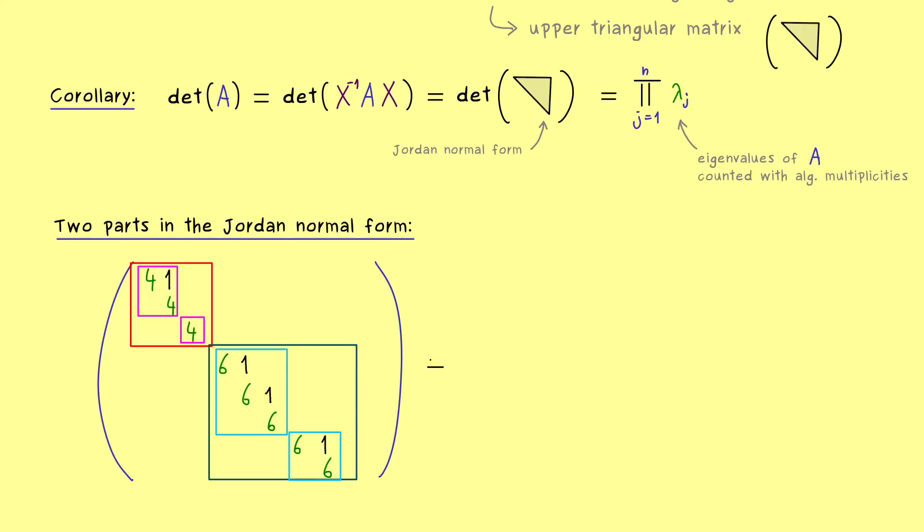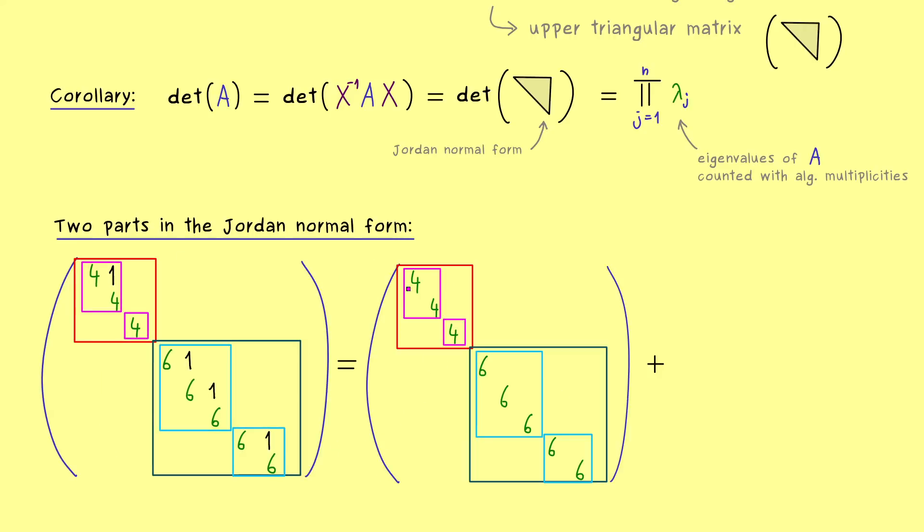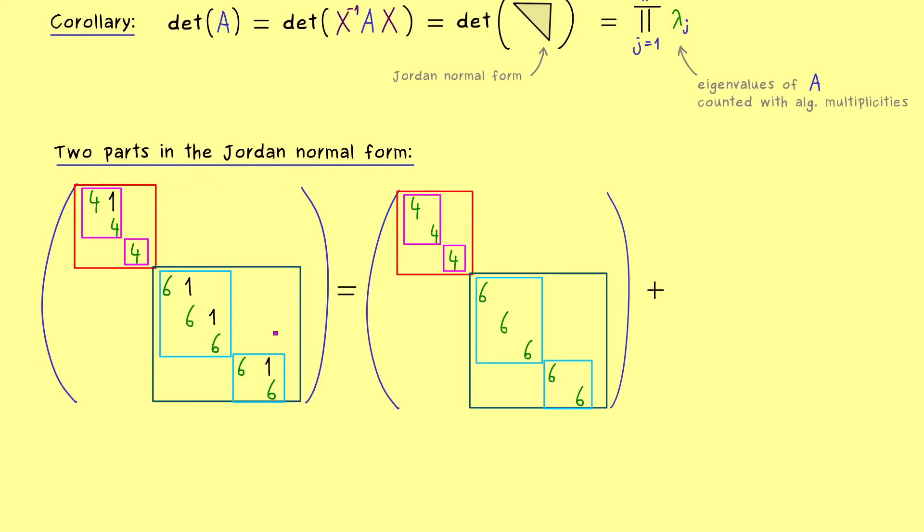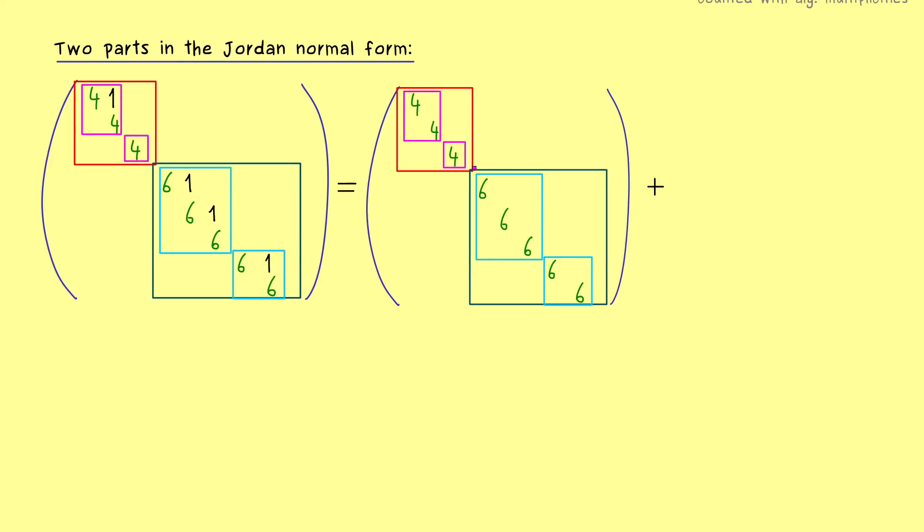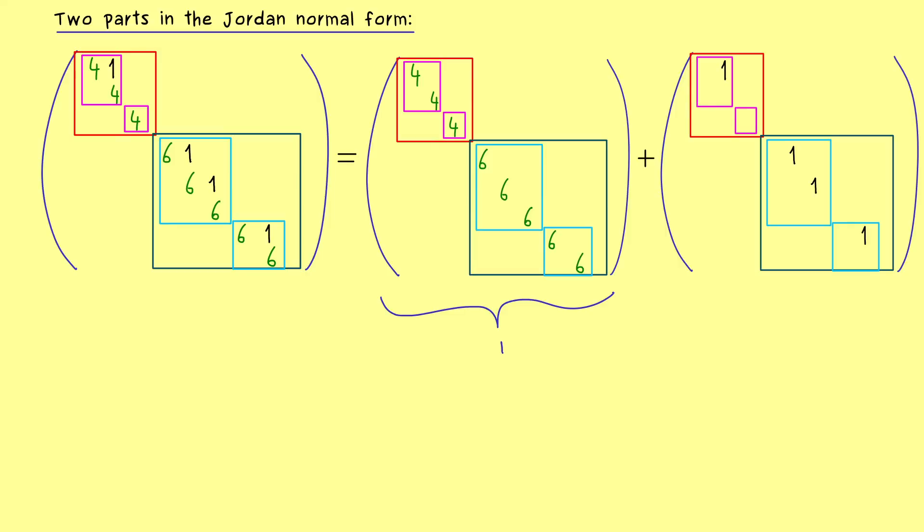So you see, this is quite simple. We just have a sum of two matrices. For the diagonal part, we just delete the ones we have above the diagonal. And for the nilpotent part, we delete the diagonal. So this is all. We just have a matrix D and a matrix N. And we calculate the sum to get our Jordan normal form back.